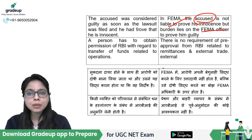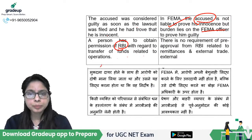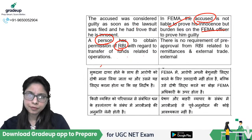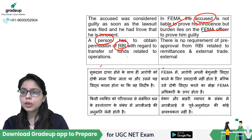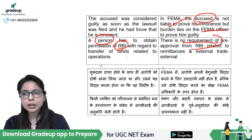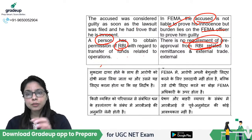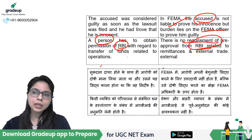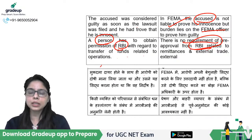Under FERA, any person who wanted to transfer funds had to obtain permission from the RBI directly. Under FEMA, no such individual RBI permission is required, because FEMA has already taken pre-permission from the RBI — so transactions under FEMA rules are automatically allowed.